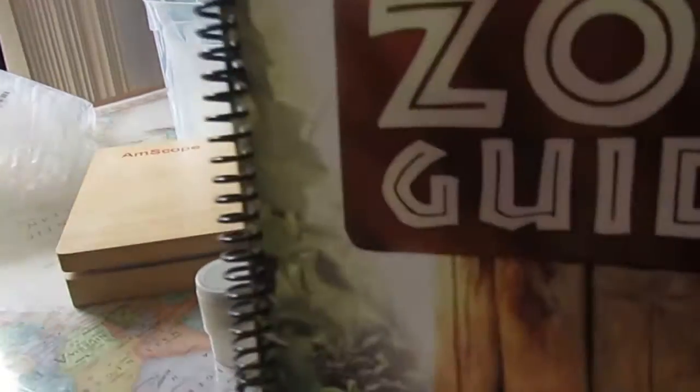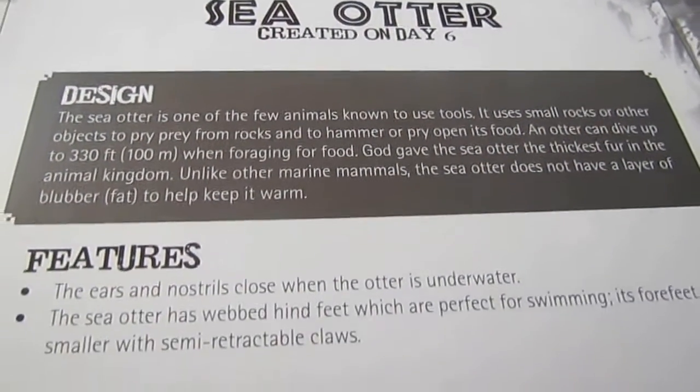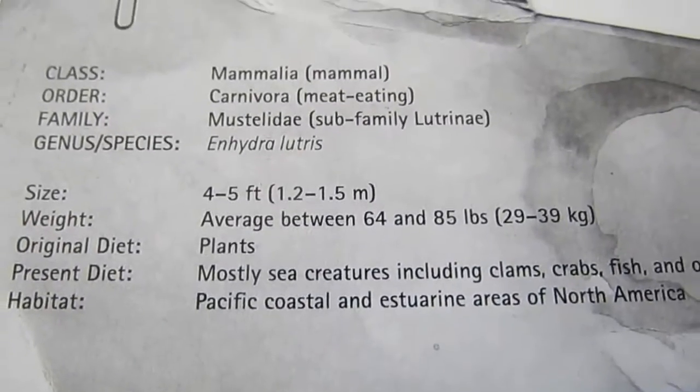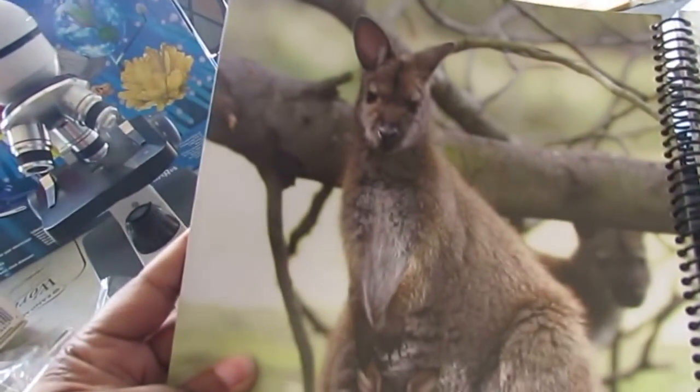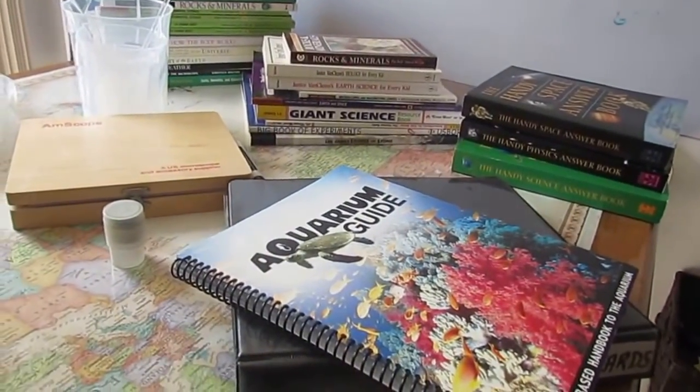Now we also have the Zoo Guide. And this is by Answers in Genesis. And let me show you what it has on the inside. I thought this was really cool. So right here you have a picture of a sea otter. And then over here it gives you some nice facts about the sea otter, the class, the order, the family. Same thing here. So it has really nice colored pictures and information. So I'll be carrying this to the zoo with us when we go. Because a lot of times they have the little signs, but I want the kids to do a little more research. So I thought that was an awesome book.